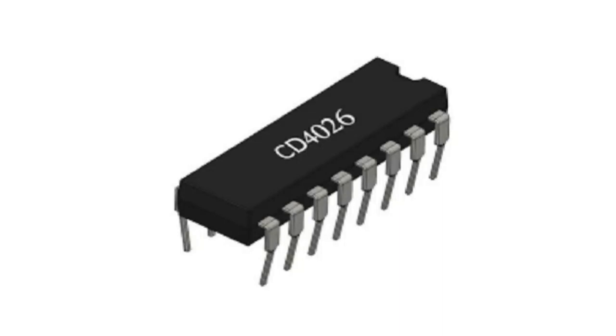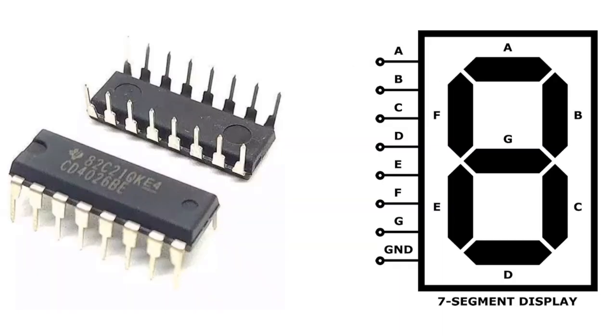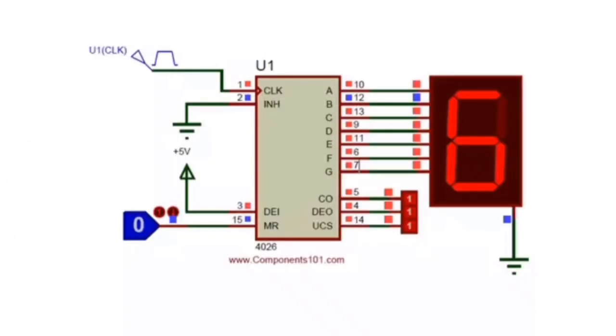The 4026 IC is a 4000 series IC. This CD4026 IC is a CMOS 7-segment counter IC and can be operated at very low power.